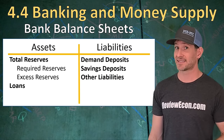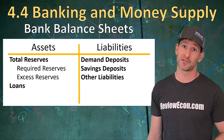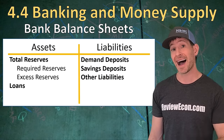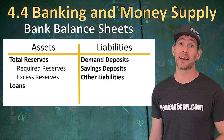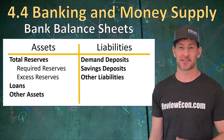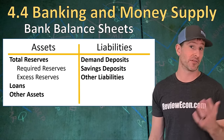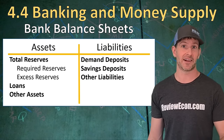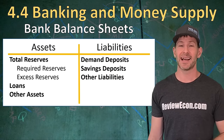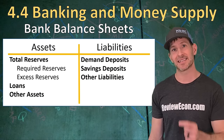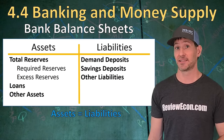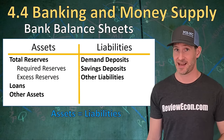Next on the asset side are loans — not loans the bank has borrowed, but loans the bank has made to their customers. These are IOUs that have value equal to whatever money was loaned. Finally, we have other assets: the bank building, desks, and so on. That stuff has value and goes on the asset side. Importantly, assets and liabilities will always be equal on the bank balance sheet. If they aren't equal, you've gone wrong somewhere and need to double check your math.